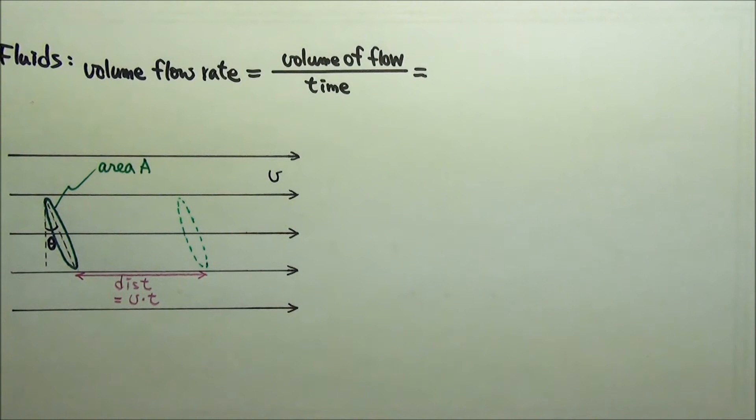In a time t, the fluid would flow through a distance V times t. So this much volume of fluid would flow through the ring. If we chop this part of the slanted cylinder off and fill it in there, we can see that the volume of the slanted green cylinder is the same as the volume of the orange cylinder.